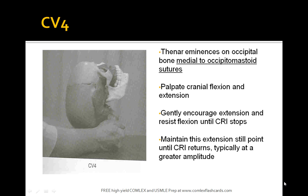To perform this technique, the flexion and extension forces of the occiput are resisted by the practitioner until a still point is reached. The thenar eminences are placed on the occipital bone, medial to the occipital mastoid sutures, as shown in the picture. The osteopathic physician palpates cranial flexion and extension, gently encourages extension, and resists flexion until the CRI is stopped. The physician maintains this extension still point until the CRI returns, typically at a greater amplitude.